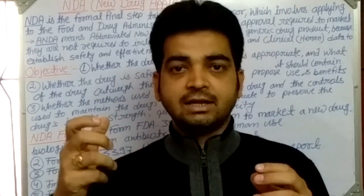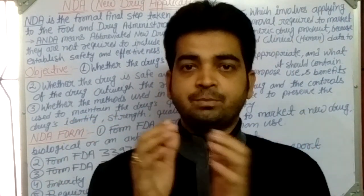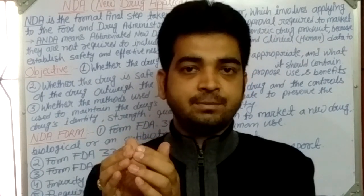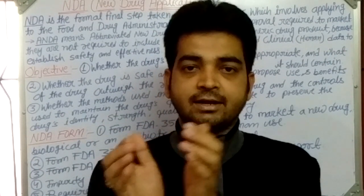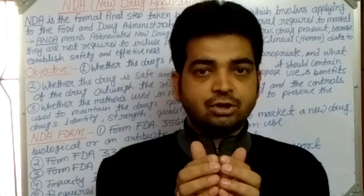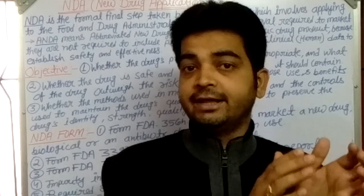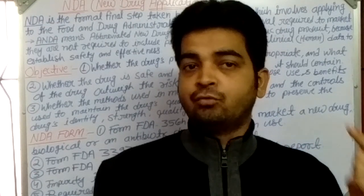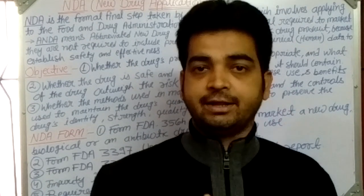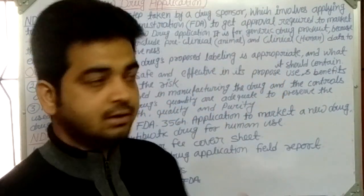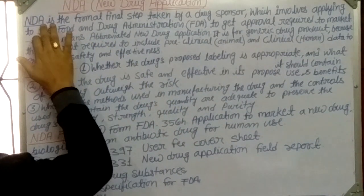Before coming to the NDA filing, there are three steps: the preclinical study, the clinical study, and then the NDA filing. In the preclinical study, the drug is tested on animals. In the clinical study, the drug is tested on humans. After that, the sponsor goes for NDA filing to the FDA — the Food and Drug Administration — for approval to market the drug.